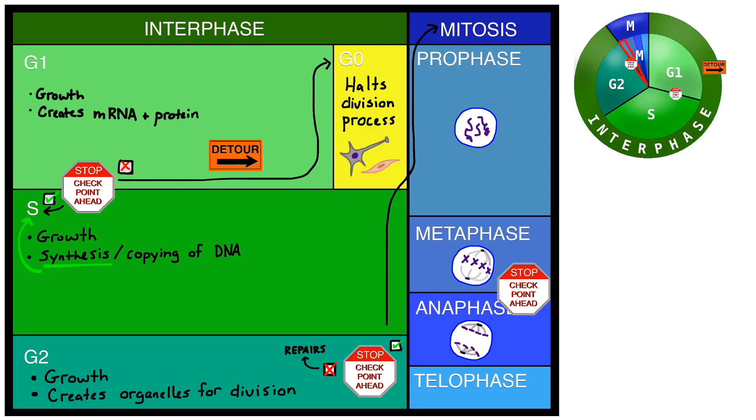Once in anaphase, the sister chromatids begin to be pulled towards opposite sets of poles. In telophase, cytokinesis occurs. The cell splits into two new cells. The process can then begin all over again.